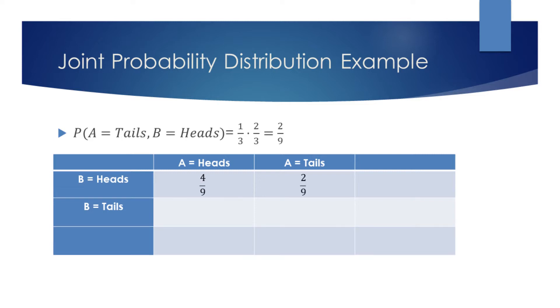Let's now find the probability to have coin A display tails and coin B display heads. The probability of A to display tails was one over three. The probability to have coin B display heads was two over three. Multiplying these two quantities, we find that the joint probability to have A display tails and B display heads is two over nine.